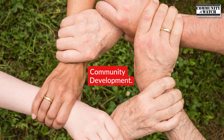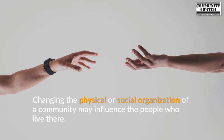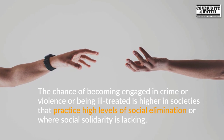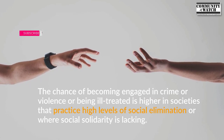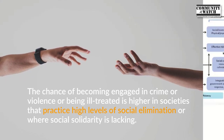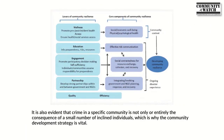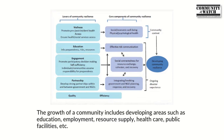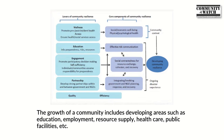Community development — changing the physical or social organization of a community — may influence the people who live there. The chance of becoming engaged in crime or violence is higher in societies that practice high levels of social exclusion or where social solidarity is lacking. Crime in a specific community is not solely the consequence of a small number of inclined individuals, which is why community development is vital. It includes developing education, employment, resource supply, healthcare, and public facilities.